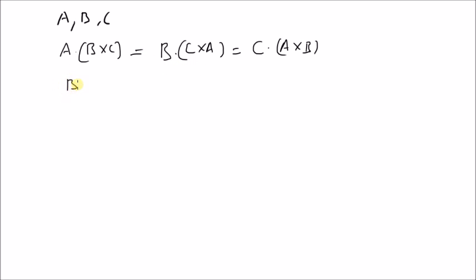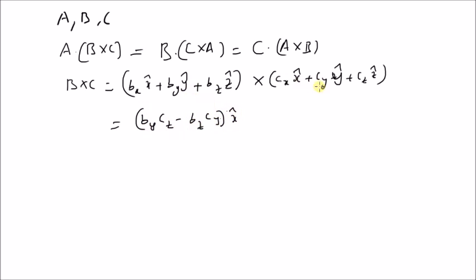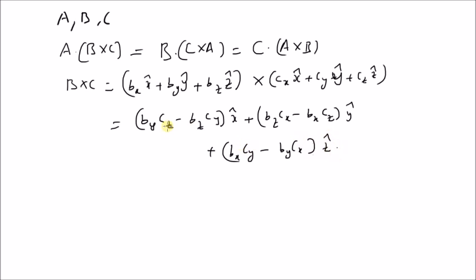Let us first define B cross C, which is equal to (BX x-hat + BY y-hat + BZ z-hat) cross (CX x-hat + CY y-hat + CZ z-hat). This is easily defined as (BY·CZ − BZ·CY) x-hat for the X component, (BZ·CX − BX·CZ) y-hat for the Y component, and (BX·CY − BY·CX) z-hat for the Z component. So this is the cross product of B and C.